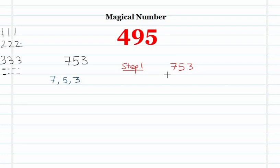Form the largest three-digit number from the digits of 753 — that is 753 itself. Form the smallest number from those digits — note it may sometimes be a two-digit number, which we will show in another example. The smallest number here is 357, obtained by reversing the largest. Now take the difference between them.